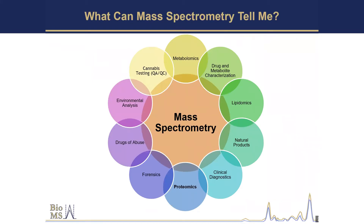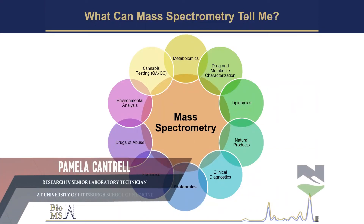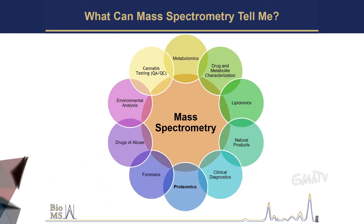So you're probably thinking, what can mass spec tell me? There are so many applications of mass spec. Everything from when you go to the doctor and they take blood and do different tests — sometimes those samples go to LabCorp and Quest and they actually run mass spec. There's also the forensic applications, like ABBY in NCIS, doping in professional sports. A big hot area right now is cannabis testing QA/QC — that's a multi-billion dollar industry starting.